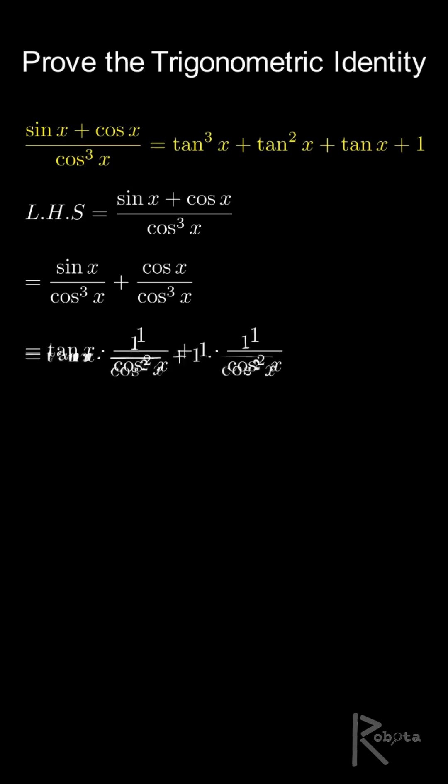Now factor out 1 divided by cosine squared x from both terms. This gives us 1 divided by cosine squared x multiplied by the sum of tangent x and 1.